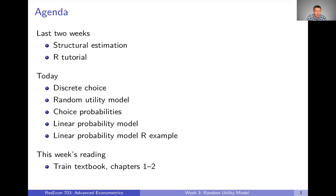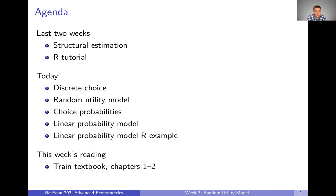The plan for today is we're going to talk about discrete choice, then the random utility model, which we'll use to set up these discrete choice problems. We're going to talk about choice probabilities, which are really important pieces we'll use when we estimate these models. And then in the last video we're going to briefly deviate from structural estimation and talk about linear probability models. Each one of these is going to be its own video, so you can know the layout of the videos for this whole week.